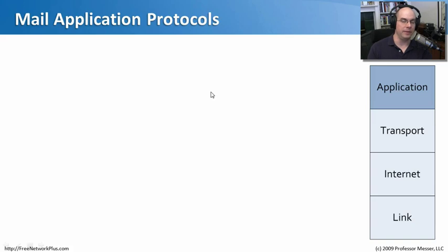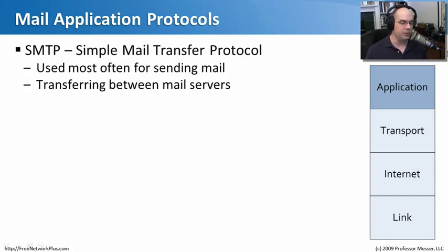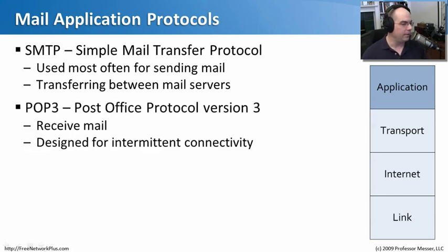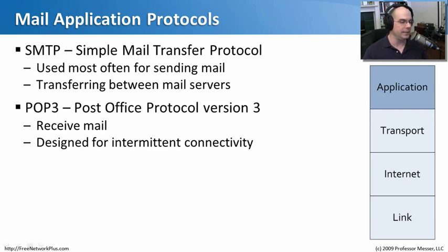Where would we be without email? Mail itself uses a number of application protocols. The one commonly used for transferring mail from one server to another is SMTP, the Simple Mail Transfer Protocol. At the workstation level, when we need to get our mail from a mail server, we use POP3, the Post Office Protocol Version 3. We connect to our mail server, download all the latest mail locally, and then disconnect. It's really designed for simple retrieval of mail — pull it down and have it local on my machine.